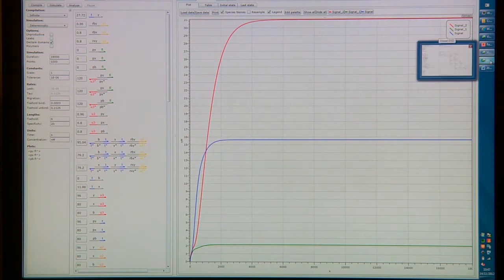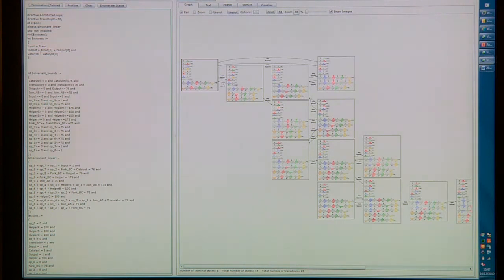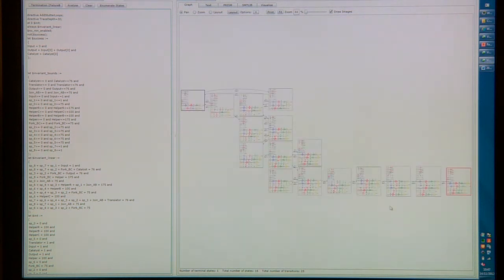In collaboration with the constraint reasoning group, we've also used Z3, the Z3 theorem prover, to be able to detect errors in our circuit design. When we analyze the circuit, if an error is detected, Z3 reproduces a trace that shows how the error was obtained.